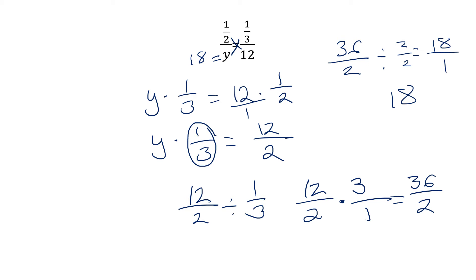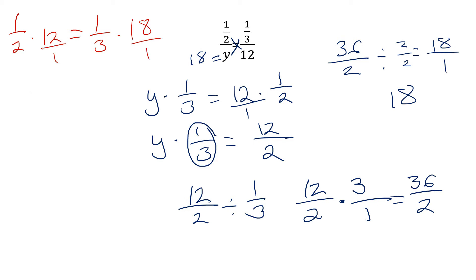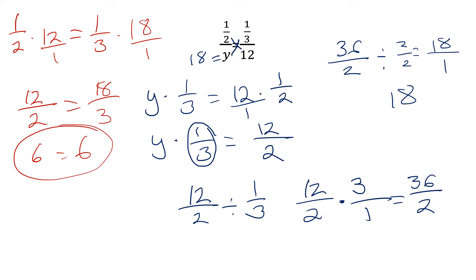As always, you should be able to plug this into your calculator or do it by hand to get the correct answer. So we should have one-half times 12 equals one-third times 18. Write whole numbers as fractions with a 1 underneath. 12 times one-half is 12 over 2, and one-third times 18 is 18 over 3. 12 divided by 2 is 6, and 18 divided by 3 is 6. So yes, they are proportional.